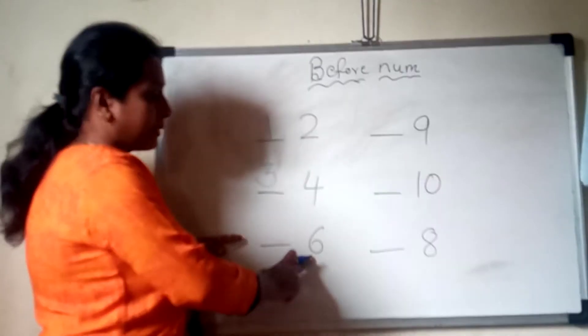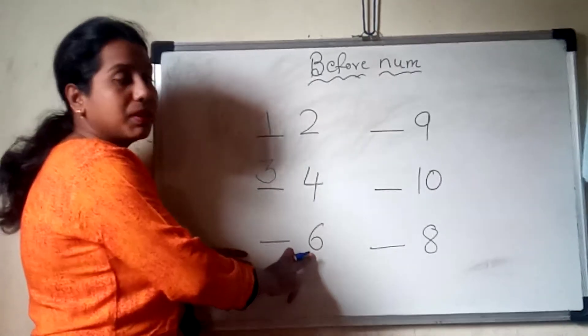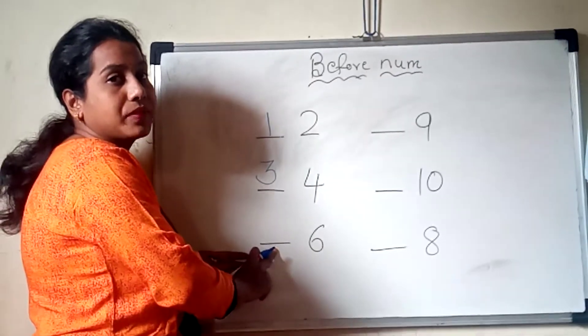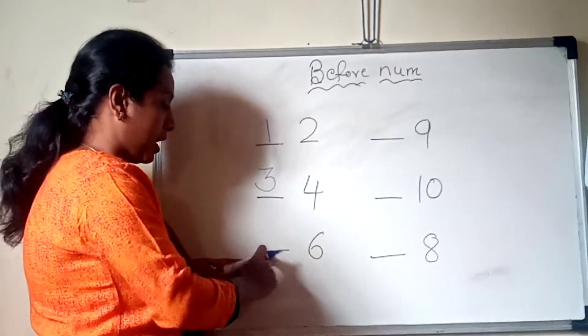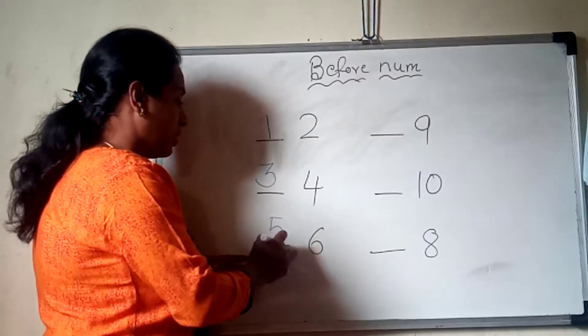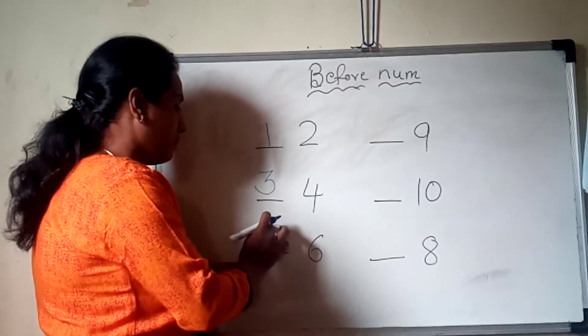Now 6. Before 6, which number is this? 5. Yes, so here we are going to write a 5.